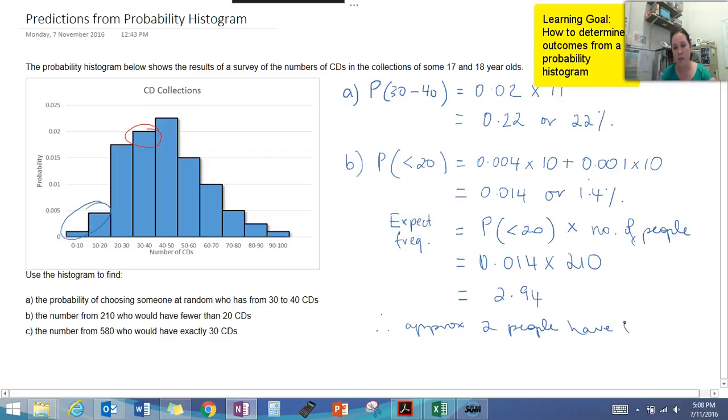And then you do part C in exactly the same way, so you can go about doing that one. Thanks guys, that's how you determine information from a probability histogram.